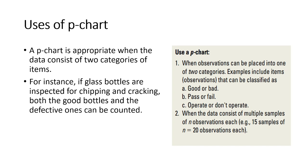P-chart is appropriate when you have two options available and out of those two options you have to choose either one. Like if a student is giving the exam, he will either pass or fail. If you are producing any item, either it will be good or bad. If you have purchased any new machinery, either it is going to work or it is not going to work. For example, if glass bottles are inspected for chipping and cracking, both the good bottles and the defective ones can be counted.